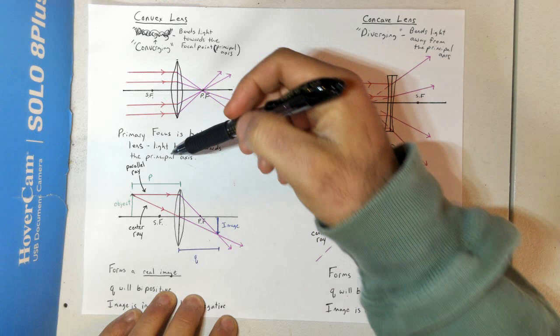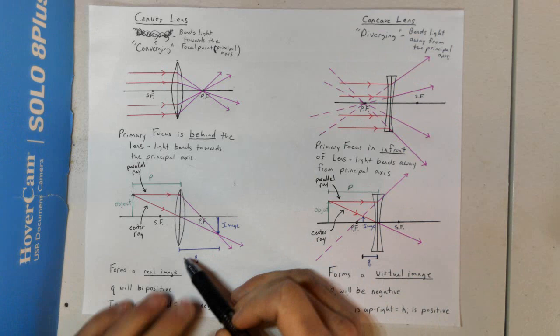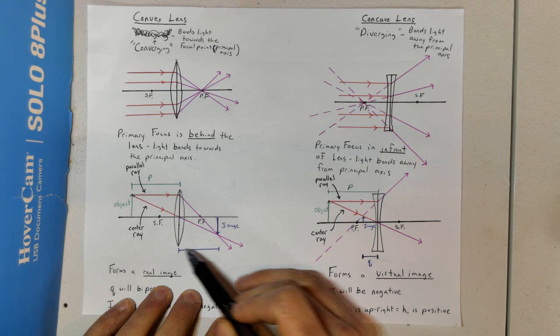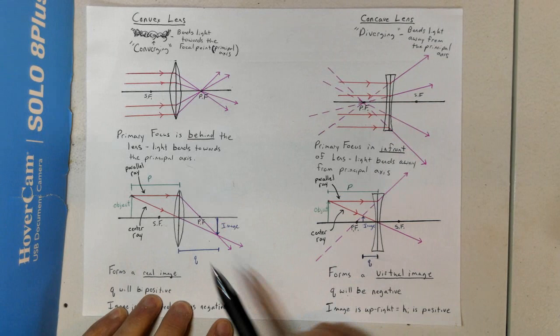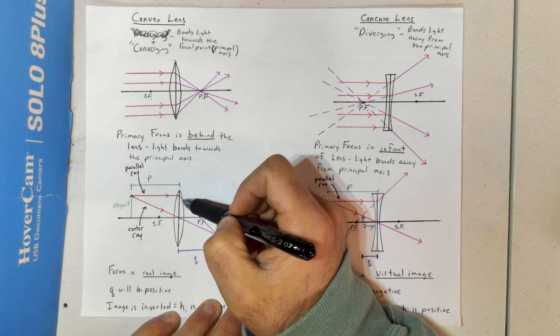We can identify some of the same things we used with mirrors. P is the distance from the lens to the object, and Q is the distance from the image to the lens. This is a little different from mirrors — for one, it forms a real image.